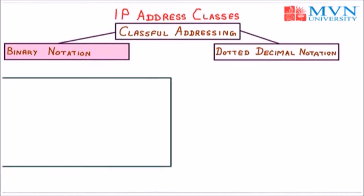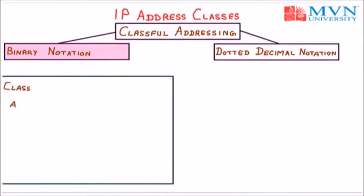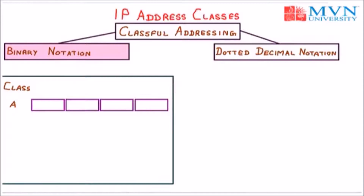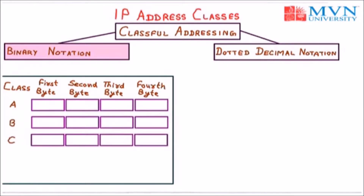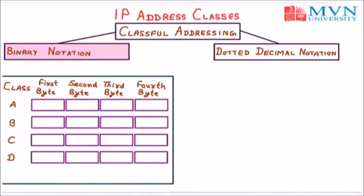We will draw a table for binary notation. We have five classes in classful addressing. In class A we have all four octets. An IP address is a combination of 32 bits or four bytes. So we have the first byte, second byte, third byte, and fourth byte. Then we have class B, class C, class D, and lastly class E — five particular classes in which we have divided our IPv4 addressing.